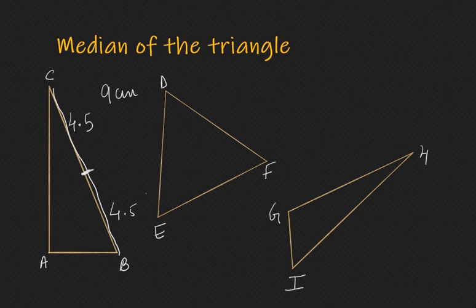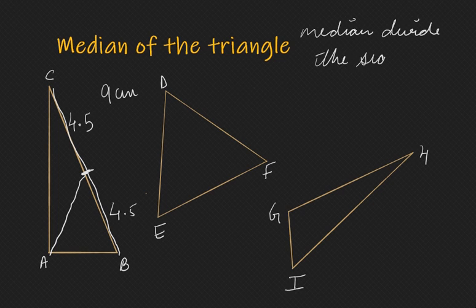We will just check the vertex opposite to this, check the vertex opposite to line BC and we will join it using scale. So this is the median. What median does, median divides the side into two equal parts.